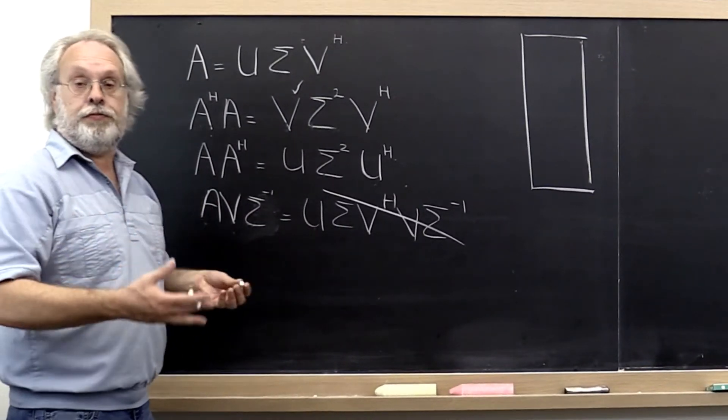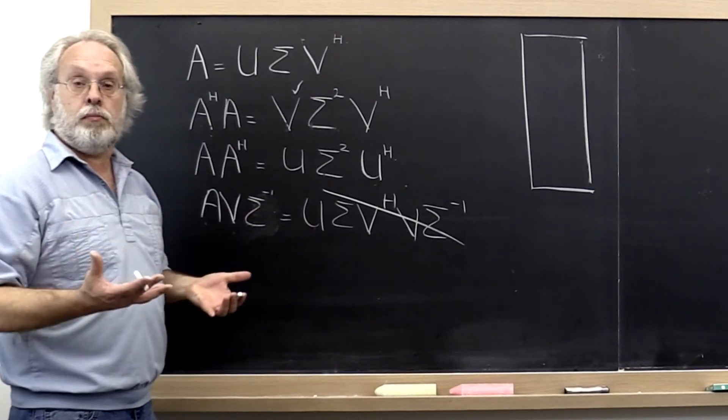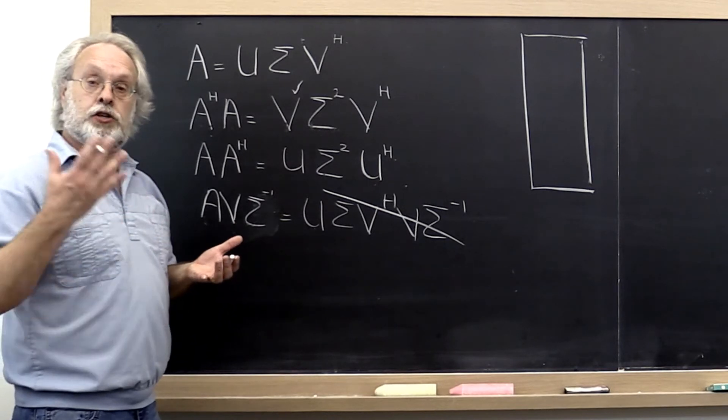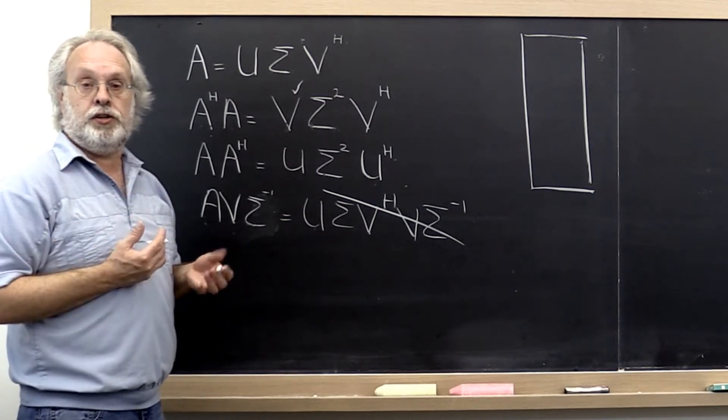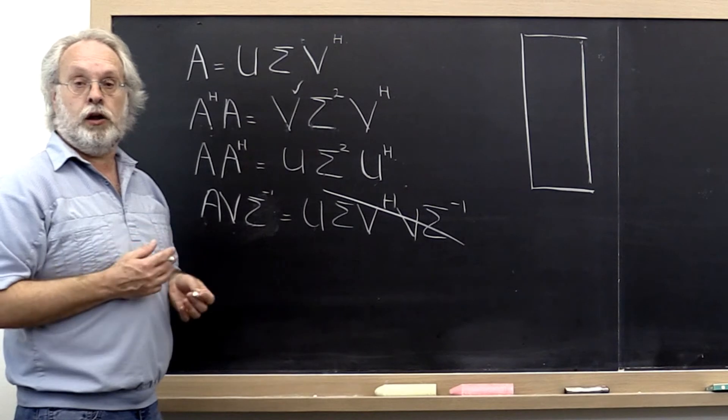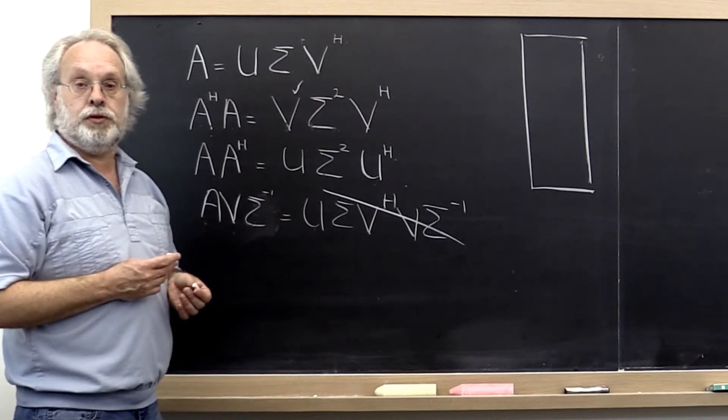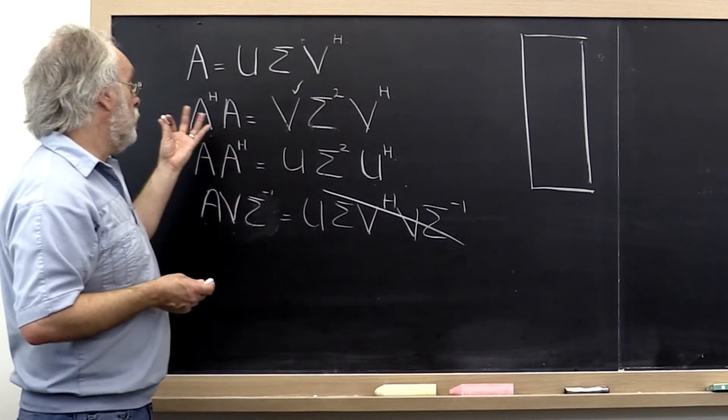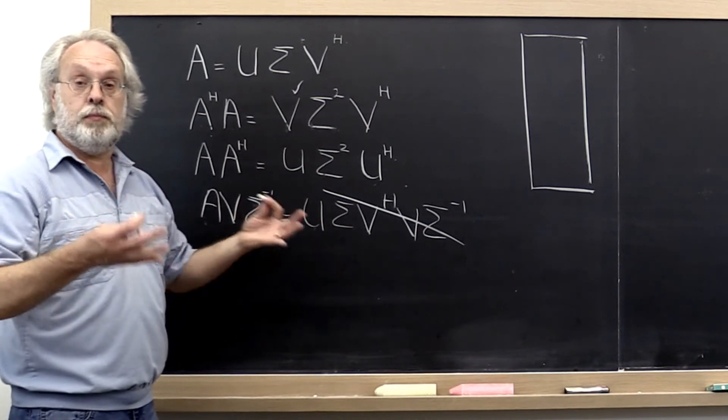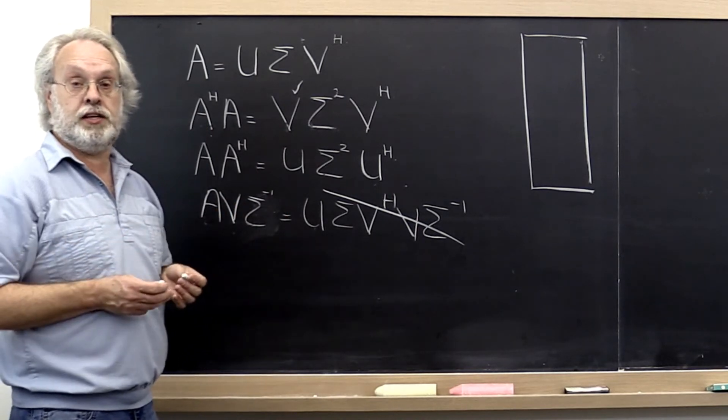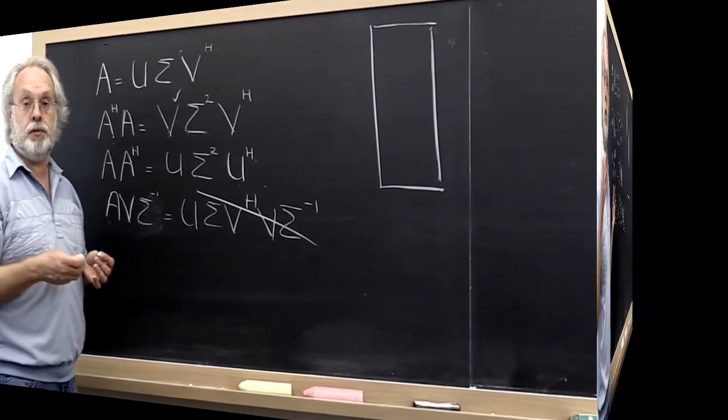We've seen before that the conditioning of a problem can take a small relative error in the input and amplify it into a large relative error in the output. And when we're dealing with matrices, it's the conditioning of the matrix, the condition number of the matrix, that dictates how that happens.